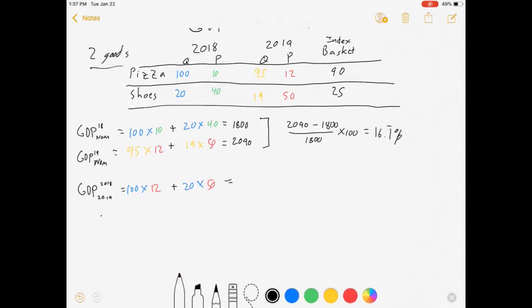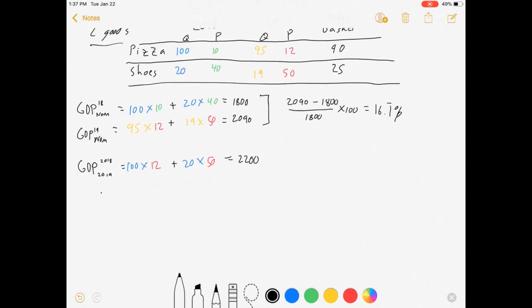So real GDP in 2018 with 2019 prices looks like this: we take the quantities from 2018 and we multiply them by the prices from 2019, so 100 times 12 plus 20 times 50. This is going to equal $2200. That's real GDP in 2018 with a 2019 base. I can also calculate real GDP in 2019 with a 2019 base, and it's going to be exactly the same as nominal GDP in 2019: 95 times 12 plus 19 shoes times 50 dollars a shoe.